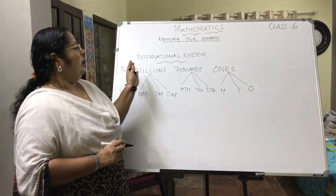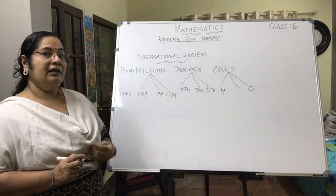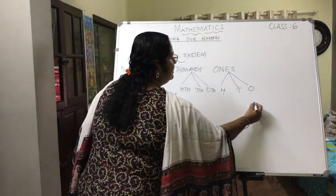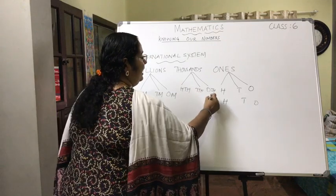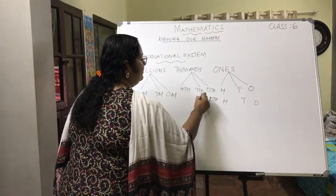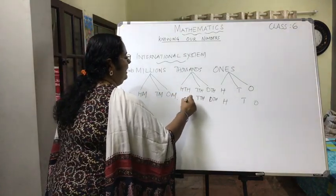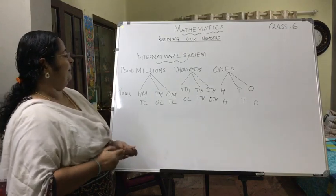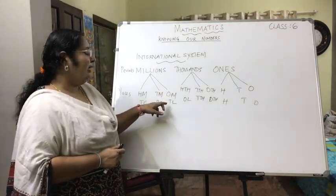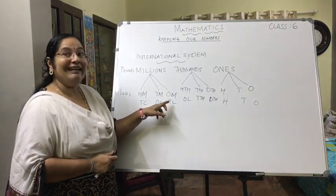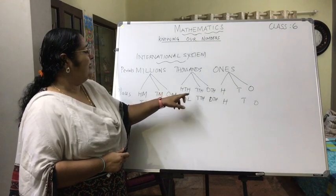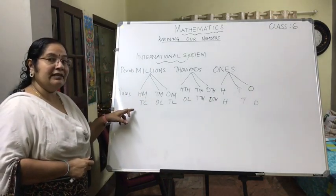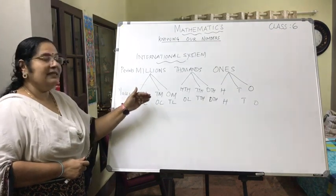Now let us compare this with the Indian system. In the Indian system the places are: ones, tens, hundreds, one thousand, ten thousand, one lakh, ten lakh, one crore, and ten crore. Comparing: one million is equivalent to ten lakh; hundred thousand is equivalent to one lakh; and hundred million is equivalent to ten crore.